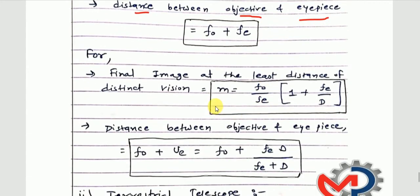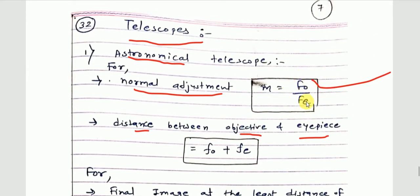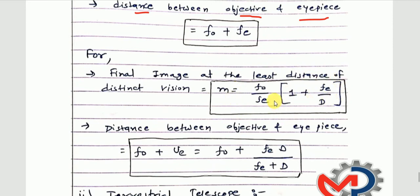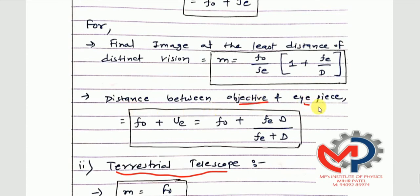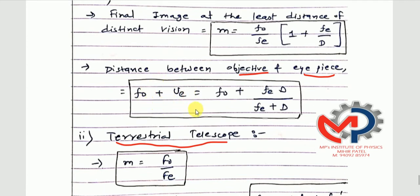At the same time, when you consider the final image at the least distance of distinct vision, the formula fo/fe gets modified — it becomes fo/fe × (1 + fe/D). Note the difference from microscope: there it was D/f, here it is f/D — remember this as an inverse technique. These are the key words to compare.